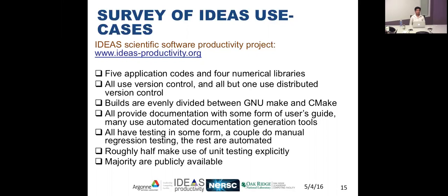Builds in these projects are equally divided between GNUmake and CMake. All projects provide some form of documentation with a user's guide, and most use automated documentation generation tools. The amount of documentation varies from code to code. All codes have testing in some form; the dominant form is integration testing where various components are joined together to verify overall correctness of the code. A couple do manual regression testing, but quite a few are also automated. Roughly half the projects make use of unit testing explicitly, and the majority of these codes are publicly available.